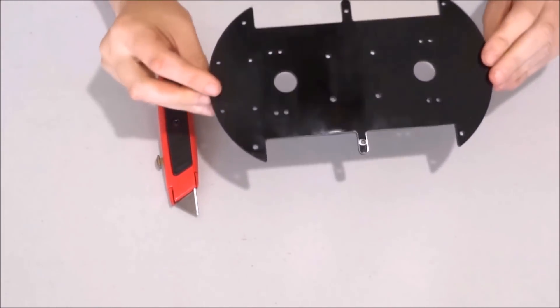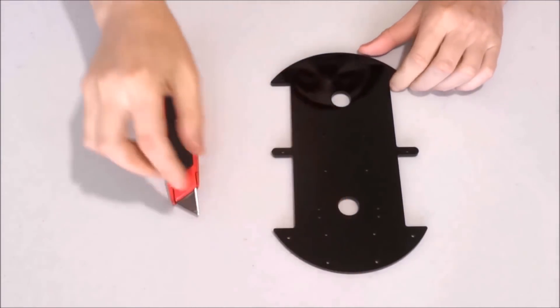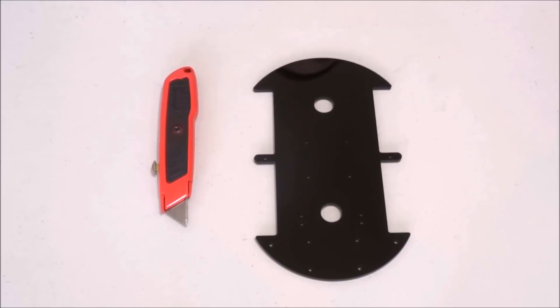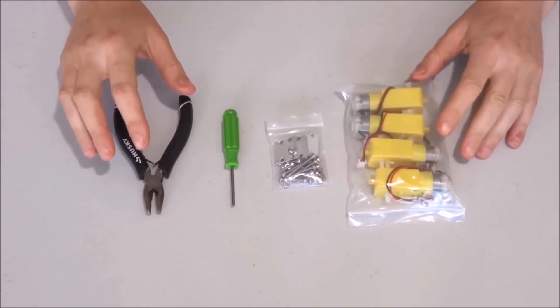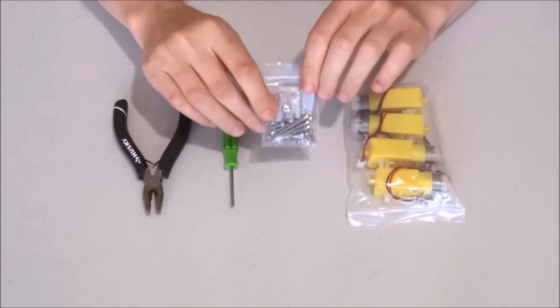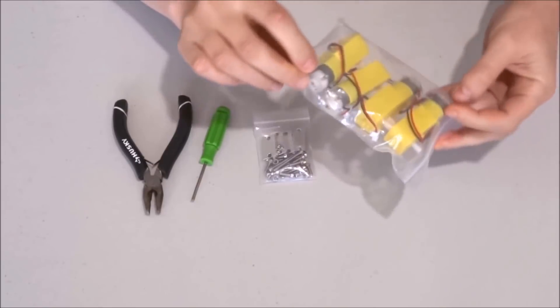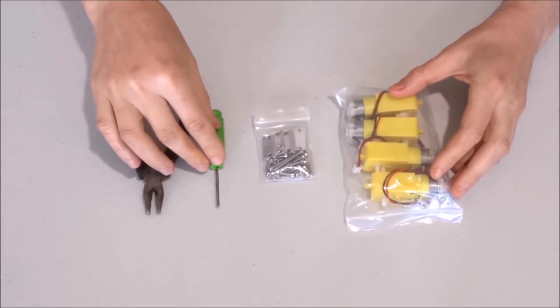All the protective cover has been removed and the layer of the chassis is ready to mount the motors on it. Now we can start installing the mounts on the motors so we can mount them on the chassis.